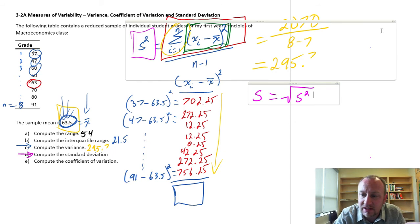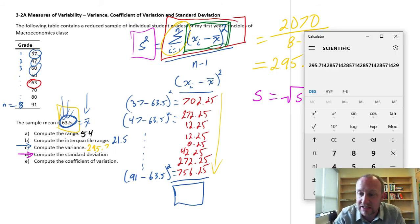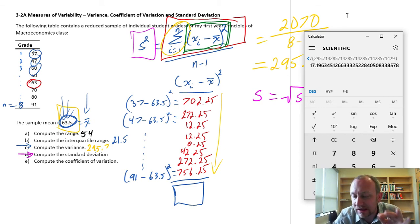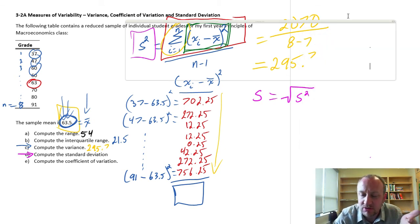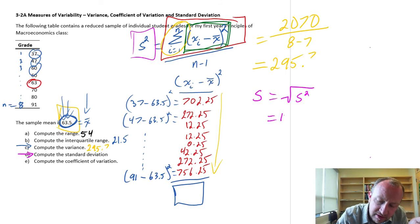So, I can just take the square root of this, and now I have a standard deviation of 17.2. I'll just write that in over here.